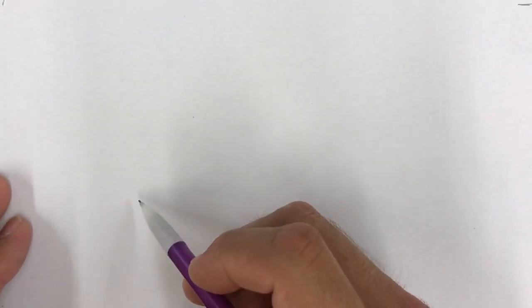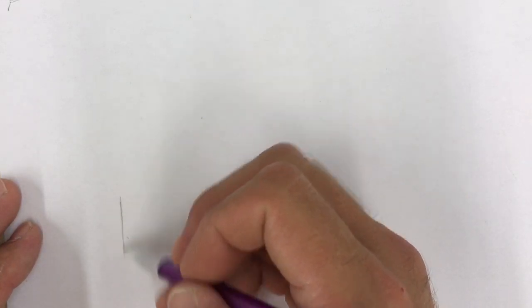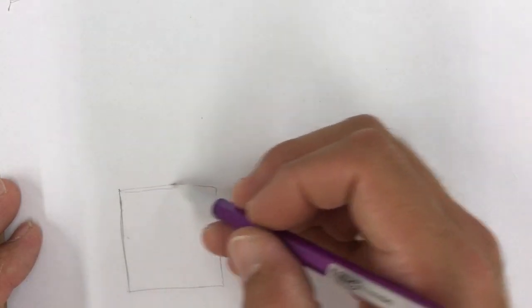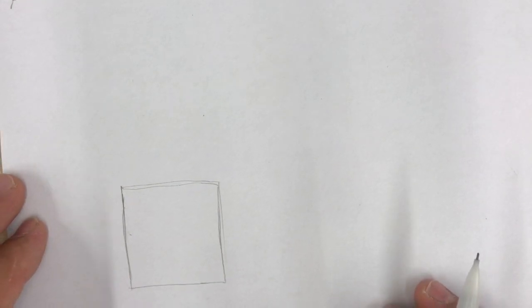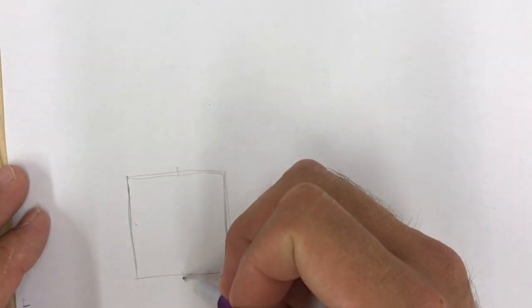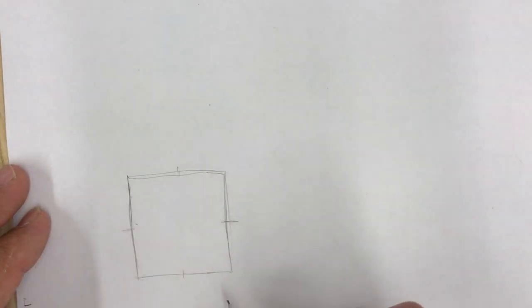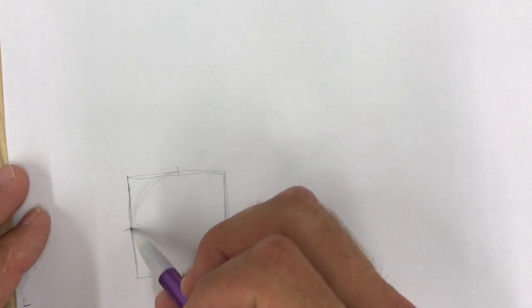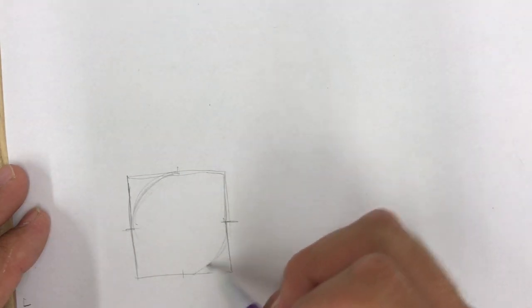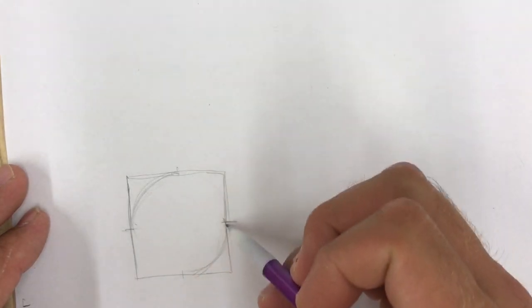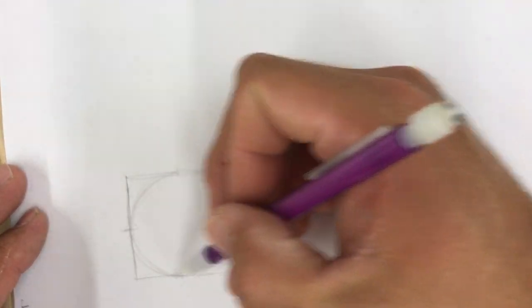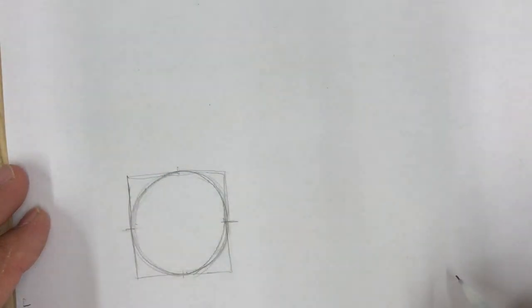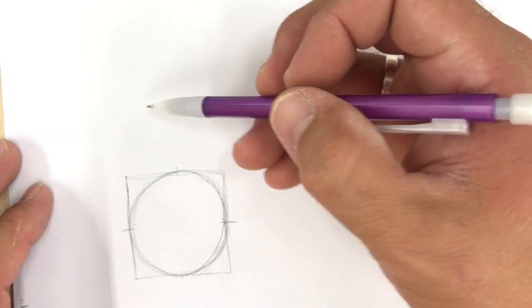So the first thing we want to do is we want to just practice. We're going to practice making just a normal square, and from that normal square we want to go halfway on each side and we want to put a circle in that square. So we're basically going to connect the two sides kind of one at a time so that we get a circle.